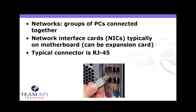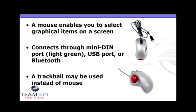How are you going to get on the internet? We do that by creating networks, or groups of PCs connected together. These PCs are all connected via NICs, or network interface cards. The most common type of connector used on these NICs is an RJ45. Next, we have mice — a mouse allows you to interact with the graphical items that you see on your computer screen. These are connected via a mini DIN, or most modern mice are going to use USB or possibly even Bluetooth.